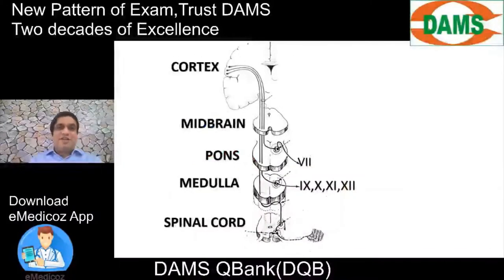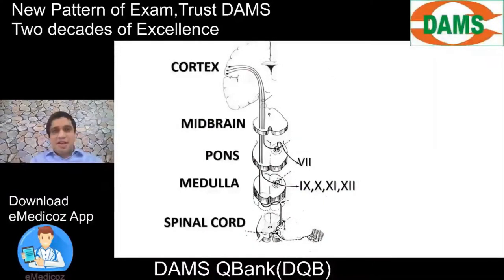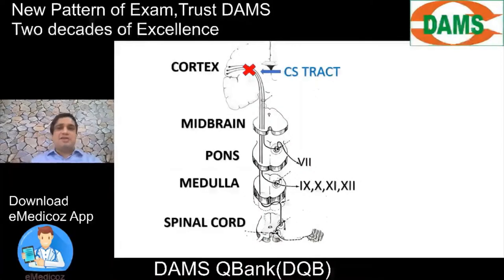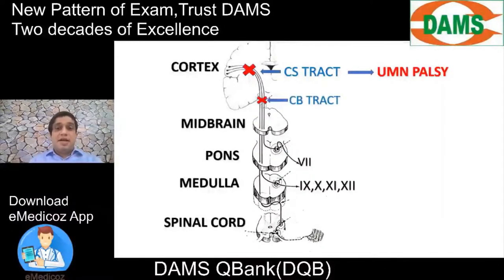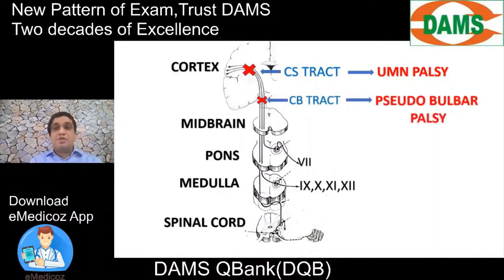In patients of ALS, lesions can occur in the corticospinal tract originating from the cortex or anywhere in the descending pathway. A lesion in the corticospinal tract causes upper motor neuron paralysis. The lesion in motor neuron disease can also be in the brainstem homologue — the corticobulbar tract — resulting in pseudobulbar palsy.